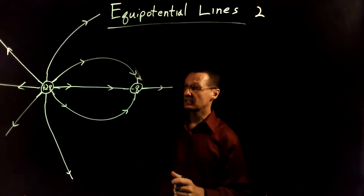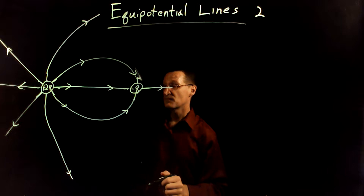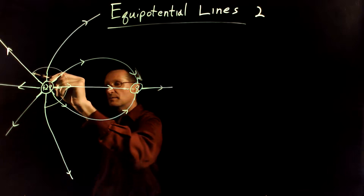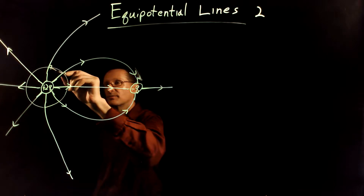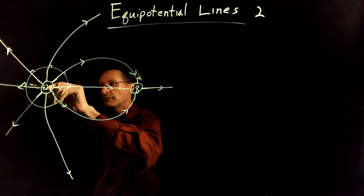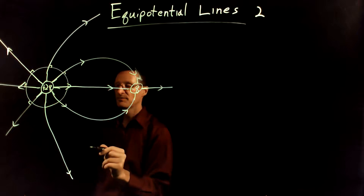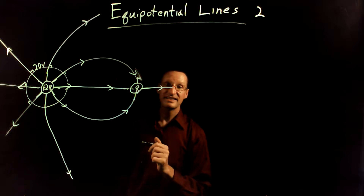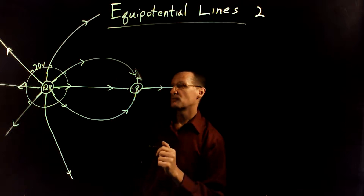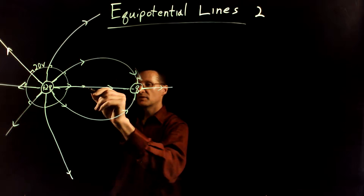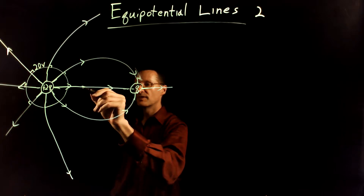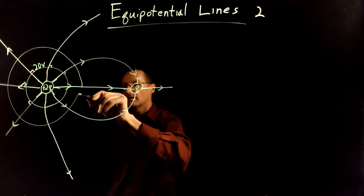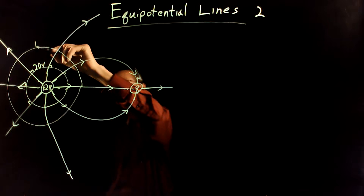Now that I have the electric field lines drawn, let's draw the equipotential lines. Let me draw one that's rather close here — it's got to be perpendicular to all of these field lines as I draw it, and that one's fairly easy to draw. I'll call that one the 20 volt line. The 10 volt line would be out here, spaced a little farther. It's got to be perpendicular — so this is the 10 volt line.